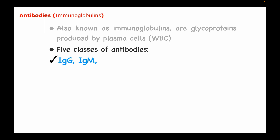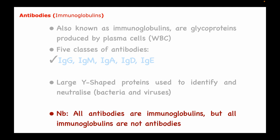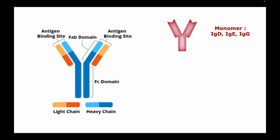We have five main classes or isotypes of human immunoglobulins: immunoglobulin G, M, A, D, and E. The main function of these immunoglobulins is to help identify and neutralize disease-causing agents such as bacteria and viruses. It's important to note that all antibodies are immunoglobulins, but not all immunoglobulins are antibodies.